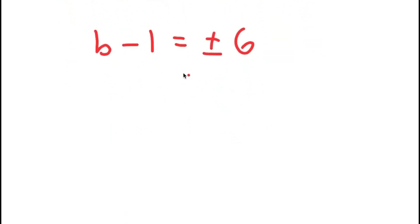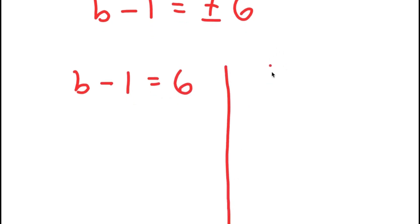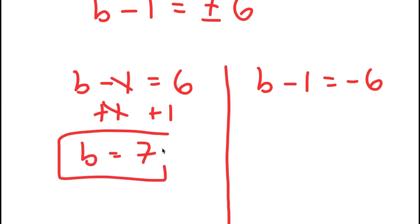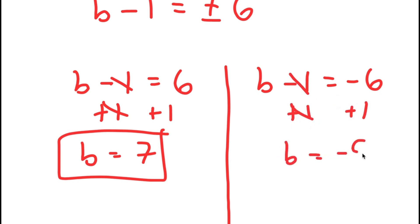This gives me two equations: B minus one is equal to positive six, and B minus one is equal to negative six. For B minus one equals positive six, I add one on both sides and get B equals seven. And for B minus one equals negative six, I again add one on both sides and get B equals negative five.